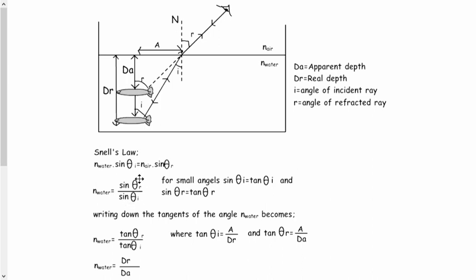Now remember, n_air is 1, so that's no longer here. That's a 1. Now really, this is going to be pretty small angles here. Again, drawn much larger so we can see it clearly.